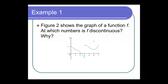Here we have a graph of function f — at which numbers is f discontinuous? At x equals one, condition one fails: does f(1) exist? No. So right away, number one doesn't hold, and I can say it's not continuous at x equals one.